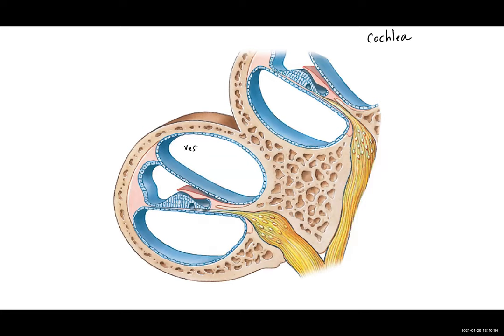We can still see our vestibular duct and our tympanic duct, which are full of perilymph. We have here our cochlear duct, which is full of endolymph. The vestibular duct is lined with what is called the vestibular membrane.